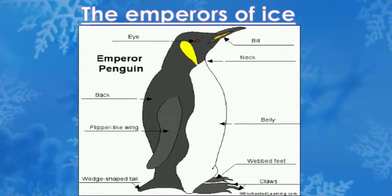The back is grayish or you can use black color there. Then you have black feathers — they are flipper-like wings. The belly is white feathers with some yellow by the neck. Around the neck, use a little yellow color. Then you have black webbed feet with claws and a tail, which is also the same color as the black feathers. This is the complete picture of the emperor penguin after coloring it. Hope you will enjoy it — please do it yourself.